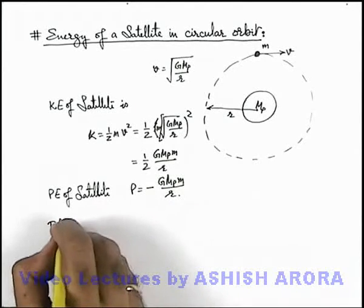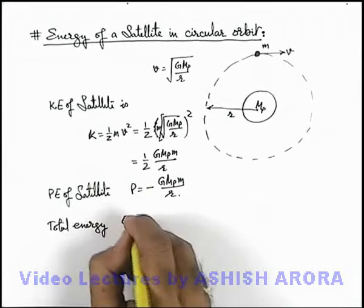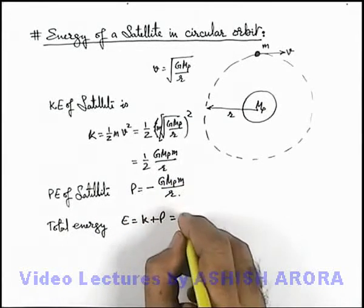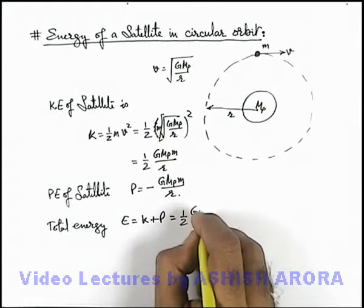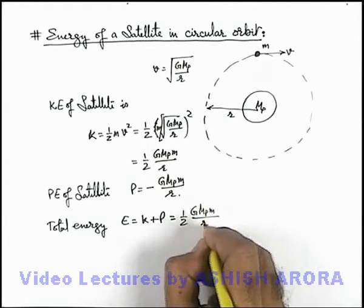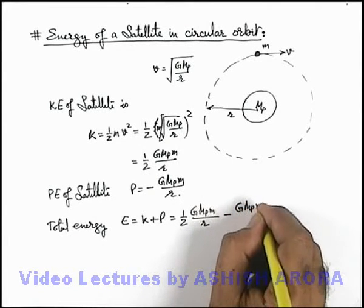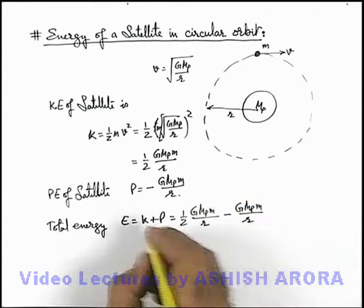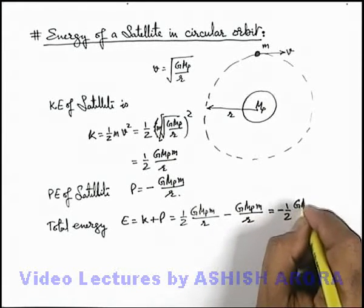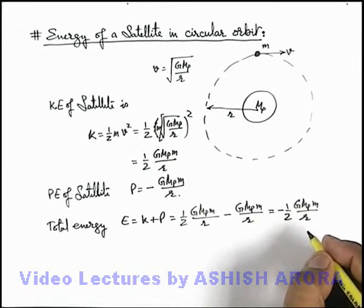Now we calculate its total energy. Total energy of the satellite can be written as kinetic energy plus potential energy. If we add the two, we get ½GMpm/r - GMpm/r. On simplifying, this becomes E = -½GMpm/r. This is the total energy of the satellite.